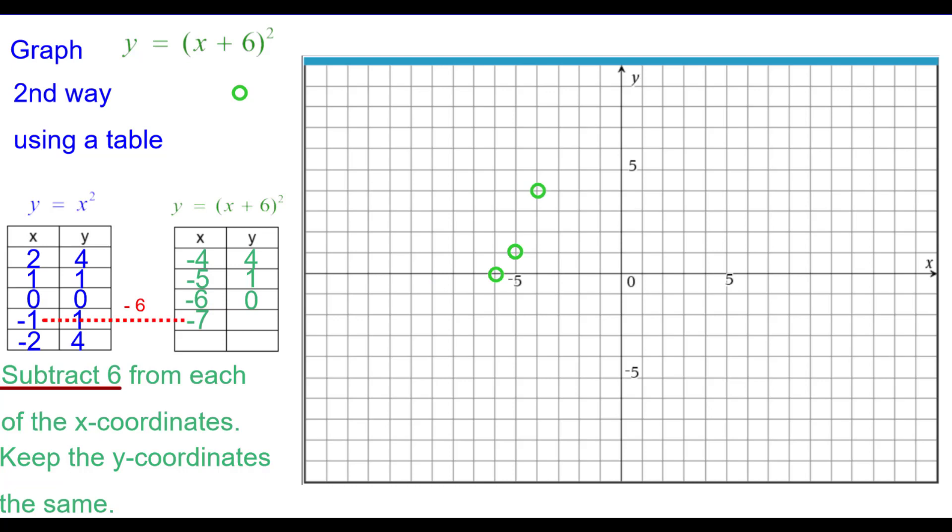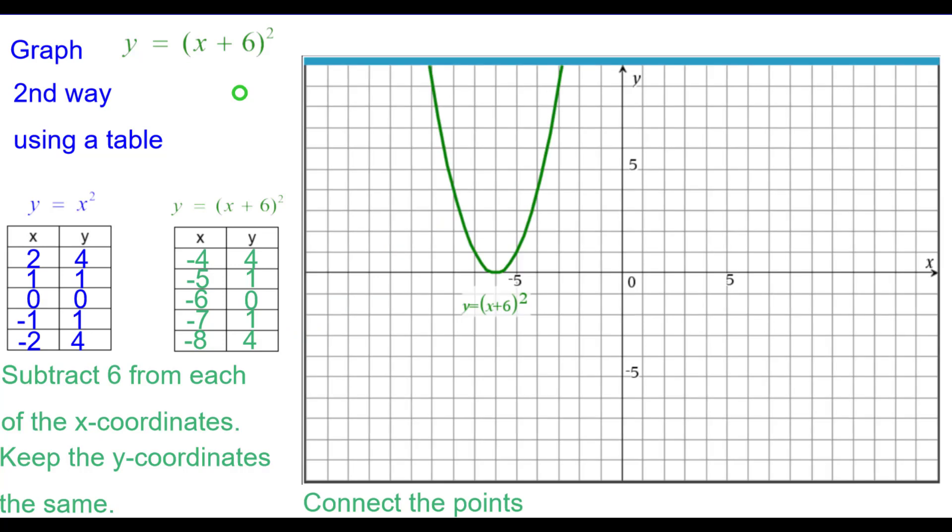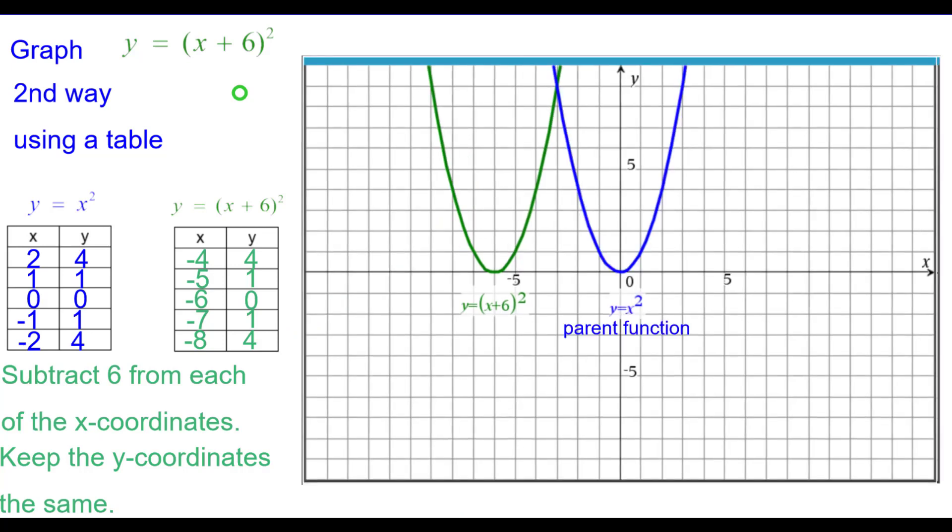Negative 1 minus 6 negative 7 comma 1. And negative 2 minus 6 is negative 8 comma 4. Connect the points again and compare that to the parent function.